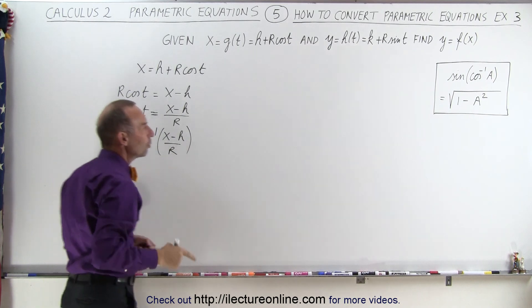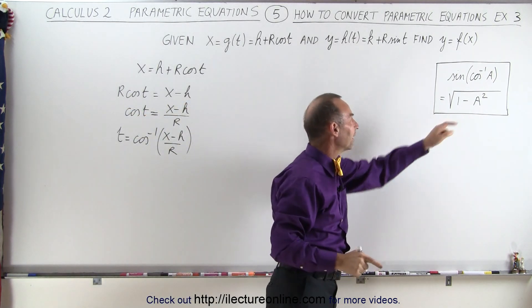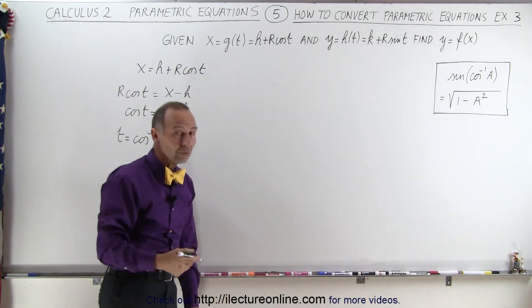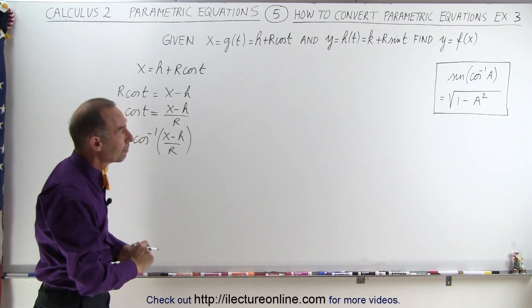And then again we're going to utilize this particular identity, that the sine of the inverse cosine of A is equal to the square root of 1 minus A squared.